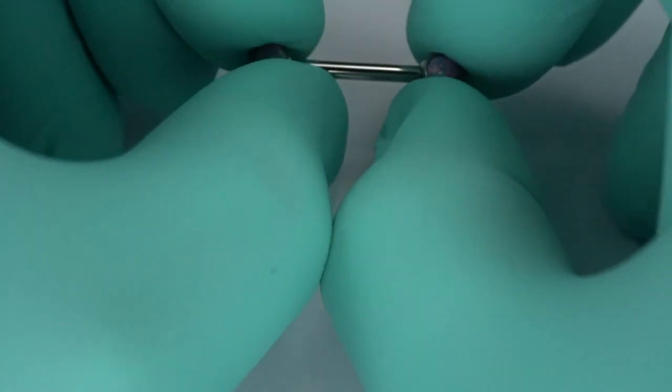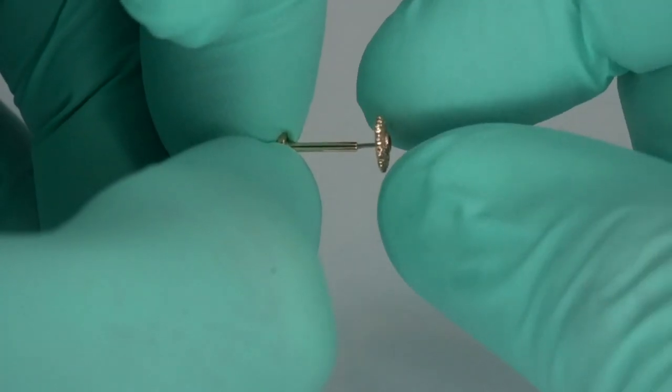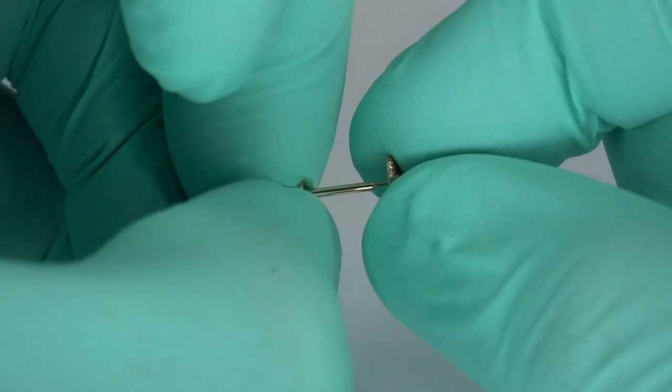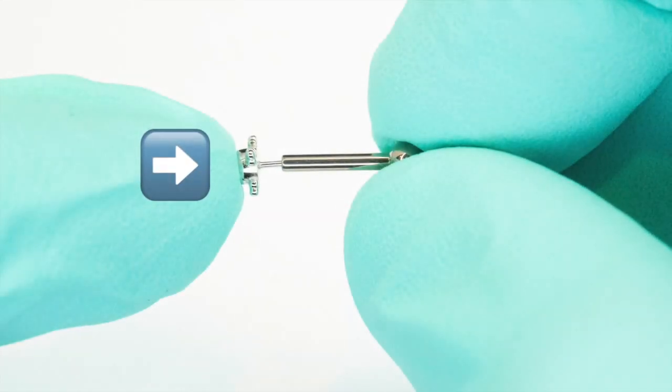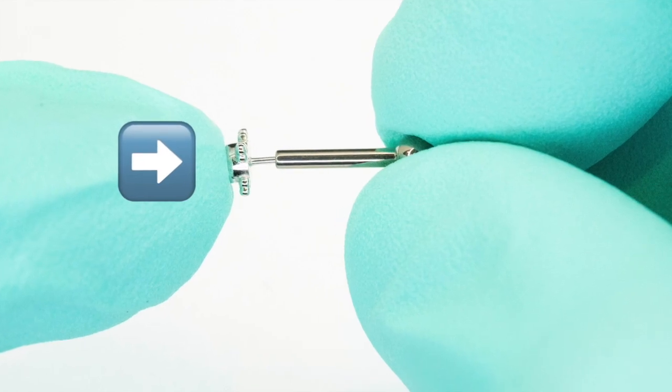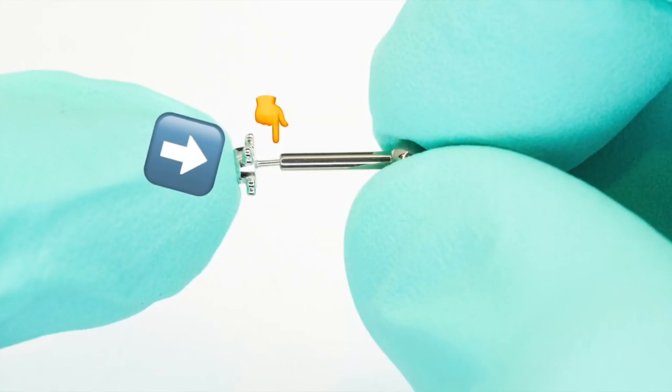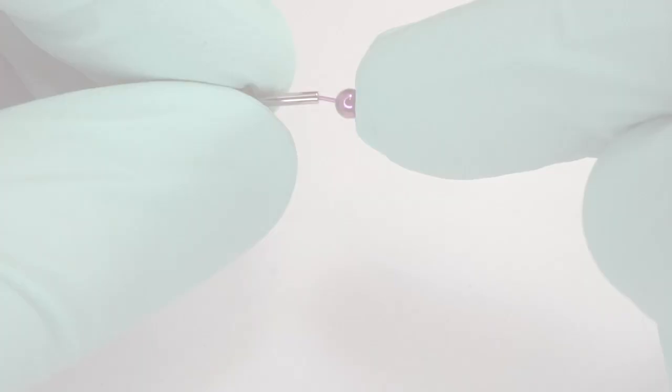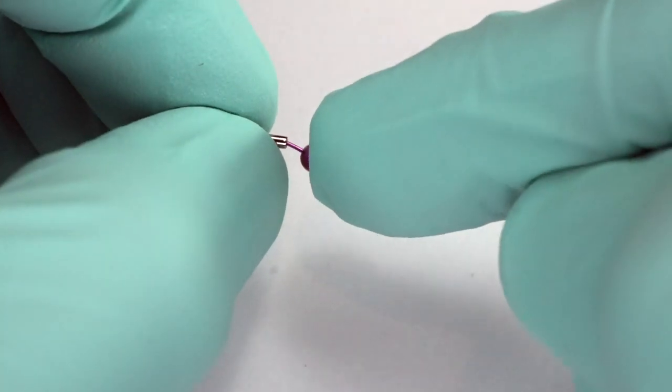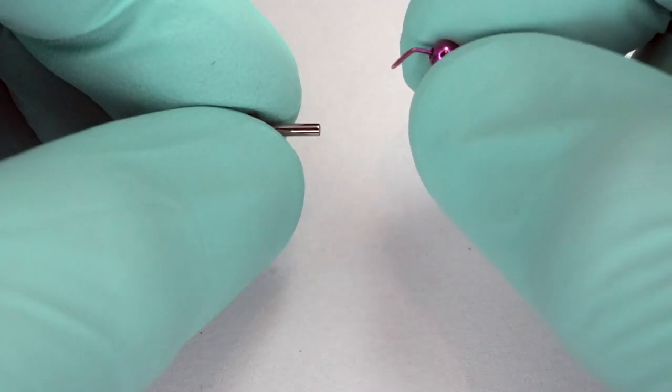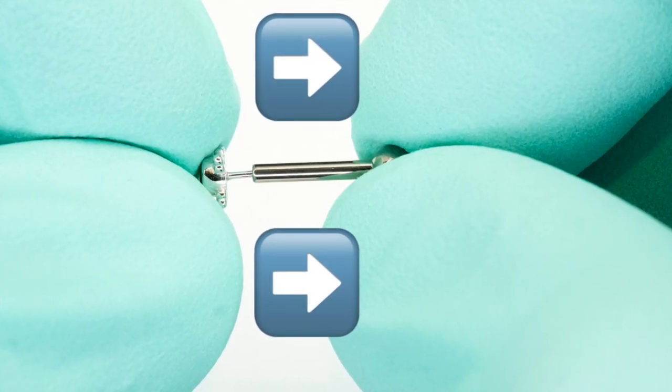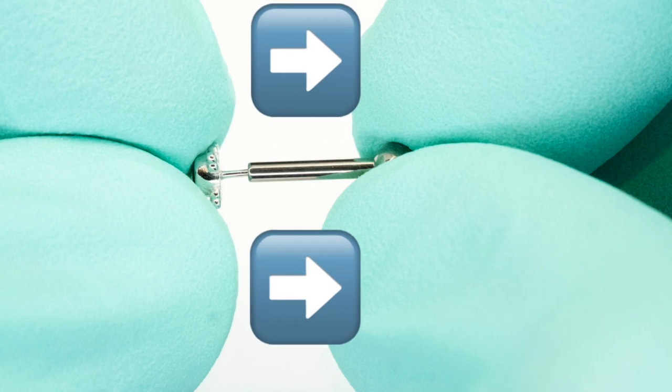To insert the end all the way and check the security of the fit you've made, you want to press the gem end all the way into the post. There is an important technique to this though. If you only use one finger, the bend that you've put in the post is liable to bend over and even snap. The pressure isn't stable enough with just one finger. What you'll want to do is use a thumb and a pointer finger to apply equal pressure straight into the post. Your opposite hand will be there on the back of the jewelry to support the post.